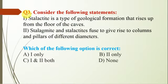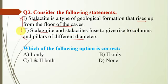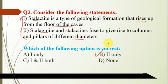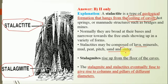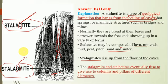Question number 3: consider the following statements. Statement one: a stalactite is a type of geological formation that rises up from the floor of the cave. Statement two: stalagmites and stalactites fuse to give rise to columns and pillars of different diameters. Statement one is incorrect; statement two is correct. Option will be B, second only. A stalactite is a geological formation that hangs from the ceiling of the cave, and they are composed of lava, minerals, mud, peat, sand, and similar materials. Stalagmites rise up from the floor of the cave. Eventually, both fuse to give rise to columns and pillars of different diameters. A useful memory trick: stalactite has a 'C' which stands for ceiling, and stalagmite has a 'G' which stands for ground.